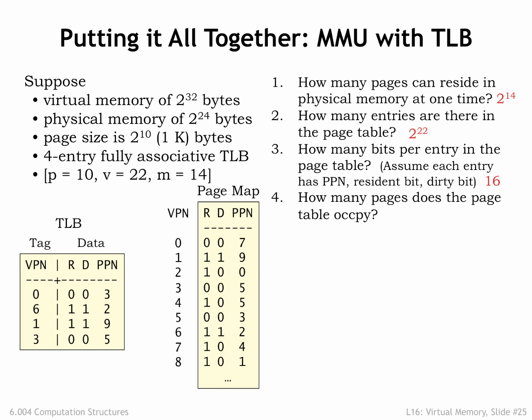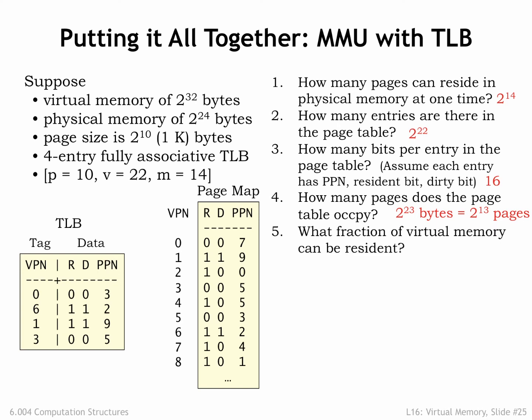How many pages does the page table occupy? There are 2 to the V page table entries, each occupying M plus 2 divided by 8 bytes, so the total size of the page table is 2 to the 23rd bytes. Each page holds 2 to the P, or 2 to the 10th bytes, so the page table occupies 2 to the 23rd divided by 2 to the 10th equals 2 to the 13th pages. What fraction of virtual memory can be resident at any given time? There are 2 to the V virtual pages of which 2 to the M can be resident, so the fraction is 2 to the M divided by 2 to the V, which is 1 over 2 to the 8th.